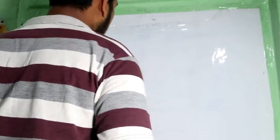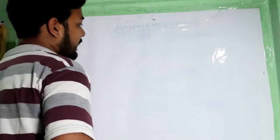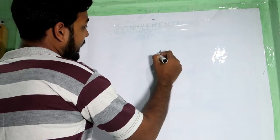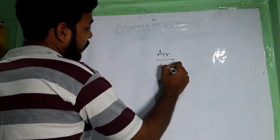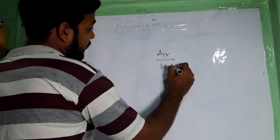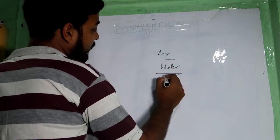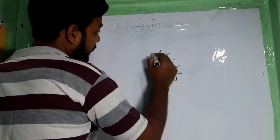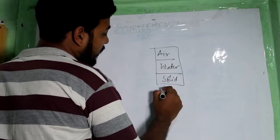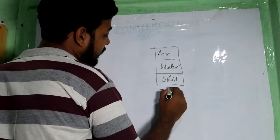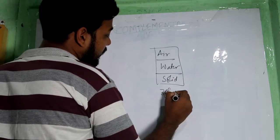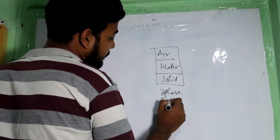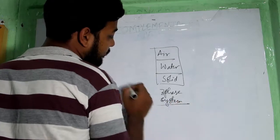So in the three-phase system, what was there? There was air, water, and solid. This is called the three-phase system.